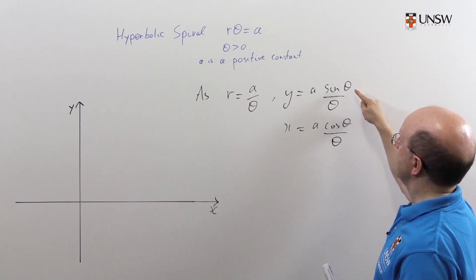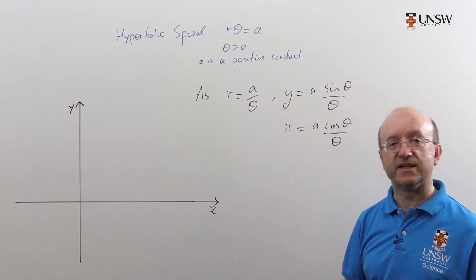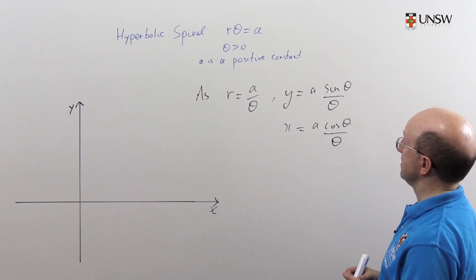What about y? Well it's a sine theta over theta and as you all ought to remember, sine theta over theta has limit one as theta tends to zero.